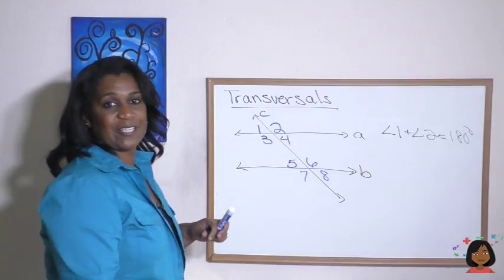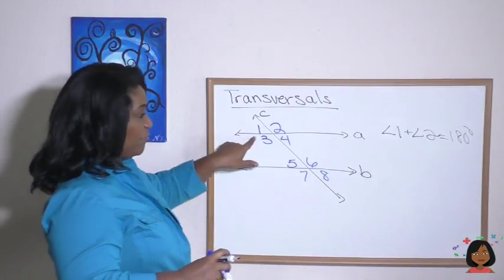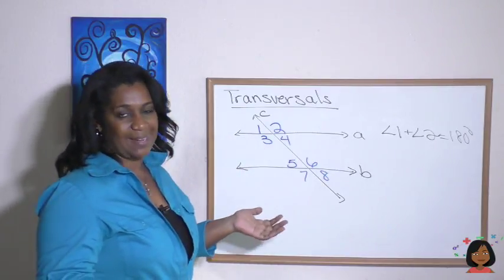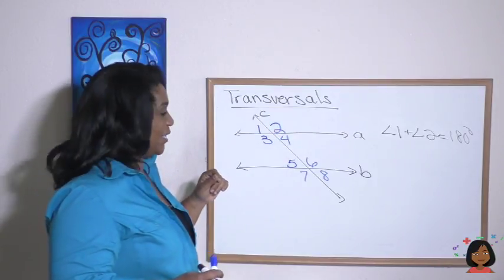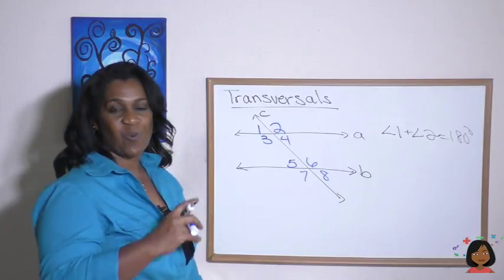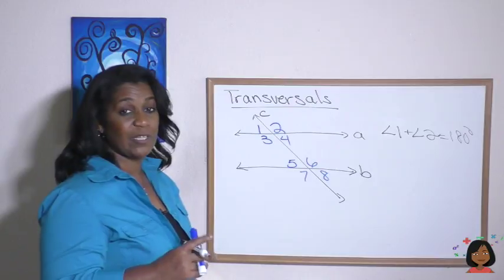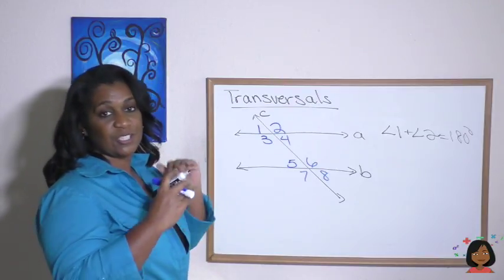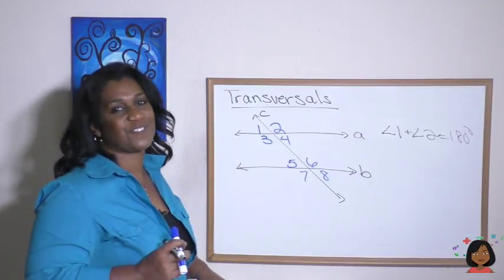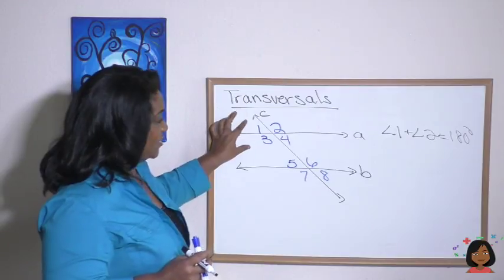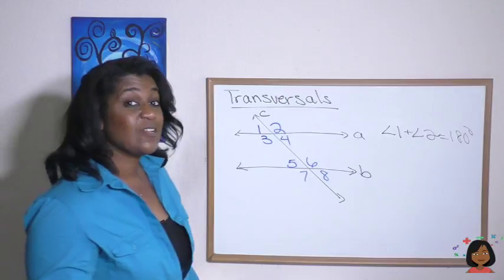Can you see any other supplementary pairs? Angles 3 and 4 will add up to 180 degrees — they share that straight line. Angles 5 and 6 add up to 180, and 7 and 8 add up to 180. But there are more — all we're looking for is a transversal cutting a straight line. Angles 1 and 3 are also supplementary, as are 2 and 4, 5 and 7, and 6 and 8.